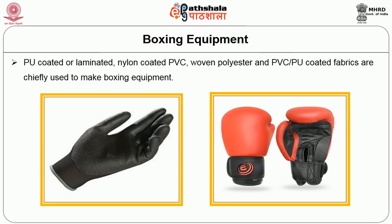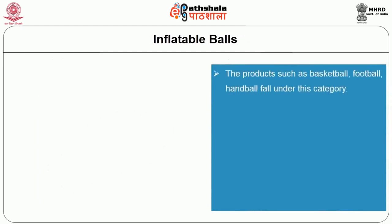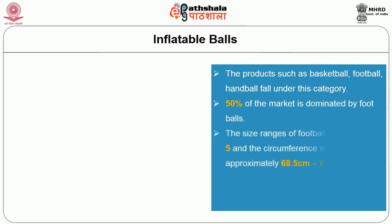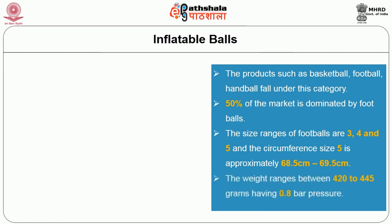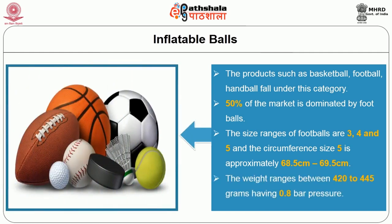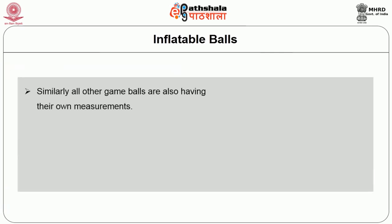South Africa, UK, US and Australia are major exporters of boxing equipment. Inflatable balls — products such as basketball, football and handball fall under this category. 50% of the market is dominated by footballs. The size ranges of footballs are 3, 4 and 5, and the circumference of size 5 is approximately 68.5 to 69.5 cm. The weight ranges between 420 to 445 grams having 0.8 bar pressure. Similarly, all other game balls also have their own measurements.